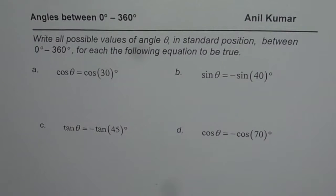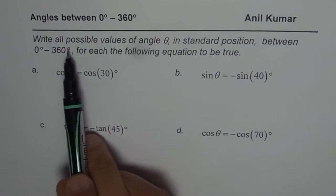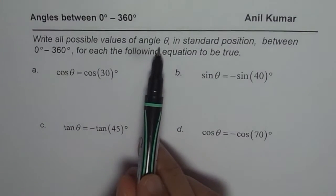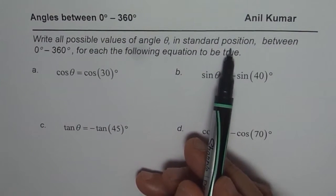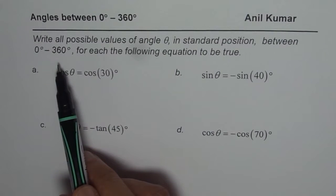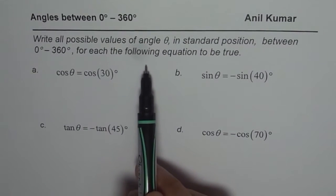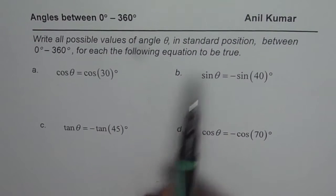I am Anil Kumar and in this video we will learn the concept of finding two angles for which the trigonometric ratios are exactly same. And these two angles will be between 0 to 360 degrees. The question here is, write all possible values of theta in standard position between 0 to 360 degrees for each of the following equations to be true.